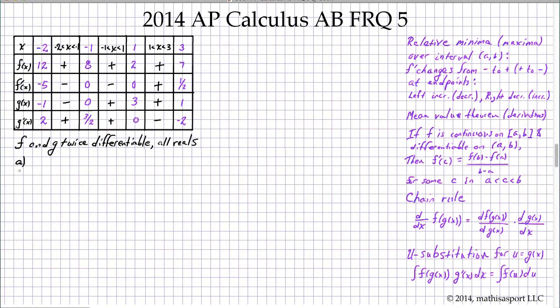First, part A asks us to find just the x coordinate of each relative min on the interval negative 2 to 3. So let's start with the open interval. We know that on the open interval negative 2 to 3, we're going to deal with the endpoints by the way.